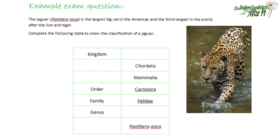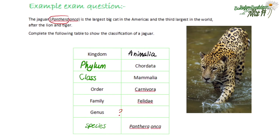These two-part names are examples of the binomial naming system that Linnaeus came up with. In an exam you might see a question like this: the jaguar Panthera onca is the largest big cat in the Americas. Complete the table to show the classification of the jaguar. You should be able to fill in the left-hand side: kingdom, phylum, class, order, family, genus, species. We know jaguars are animals so they will be in the kingdom Animalia. For the genus, look at the binomial name in the question — the genus is the first part, so the answer is Panthera. Don't forget the capital letter.